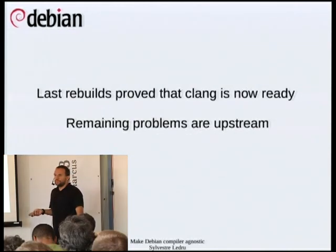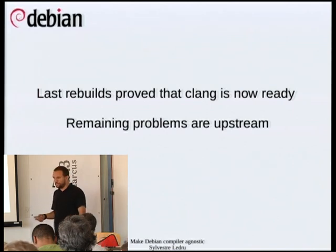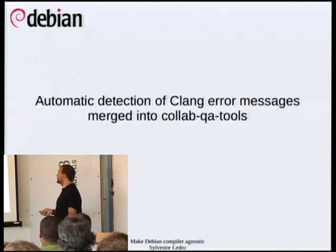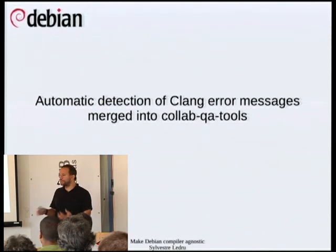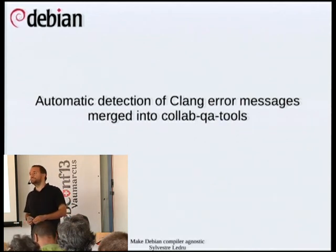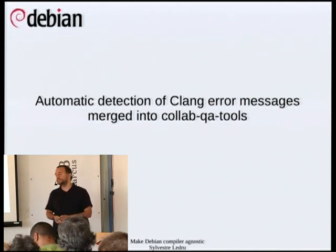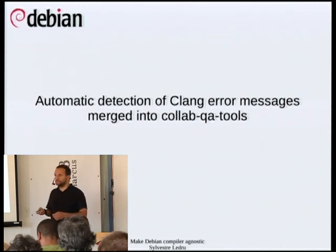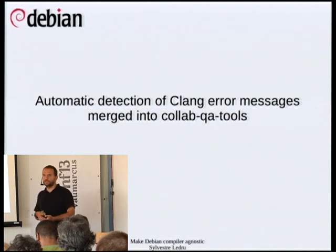The latest rebuilds prove that Clang is now ready. Most of the problems we find now are upstream issues, so we have plenty of bugs to report. Since last year, we improved and submitted patches to Collab QA tools — the tools that the Debian QA team uses to parse GCC logs — to support Clang as well, so it will now work on Clang logs too.